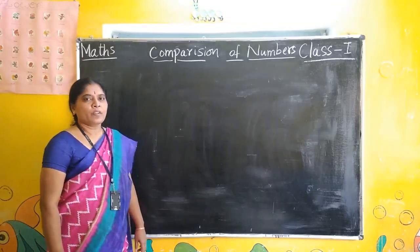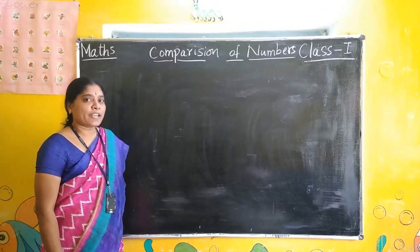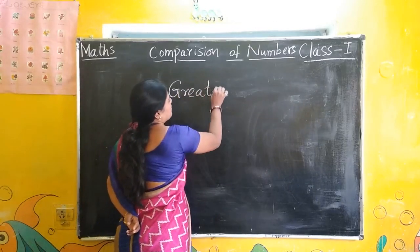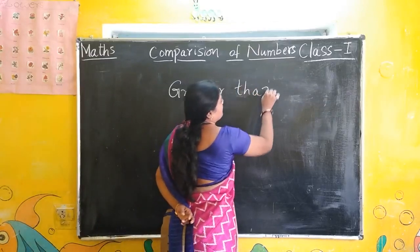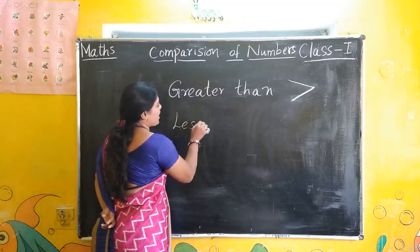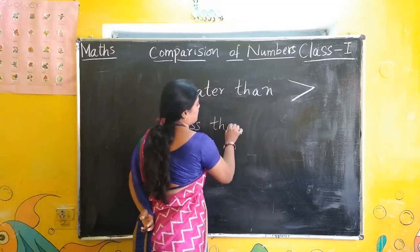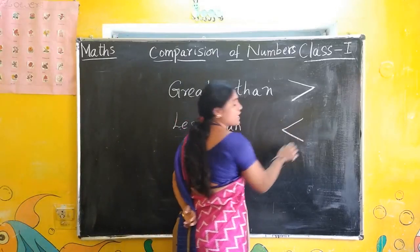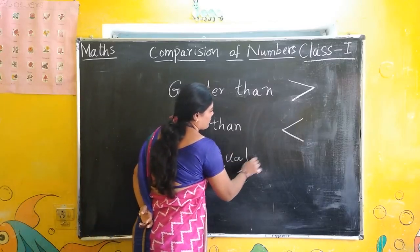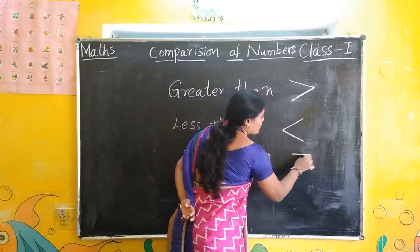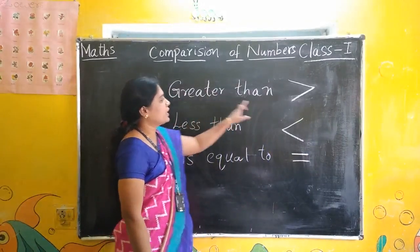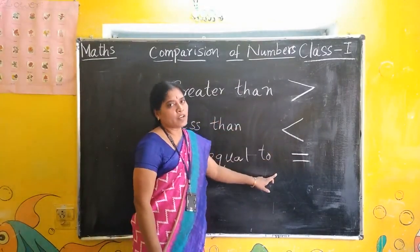Got it? Now you know children — what is the symbol for greater than? Tell me. Greater than symbol. This is greater than symbol. Next less than. This is less than symbol. Is equal to — two lines, two sleeping lines. That we call it as is equal to. Greater than. Less than. Is equal to.